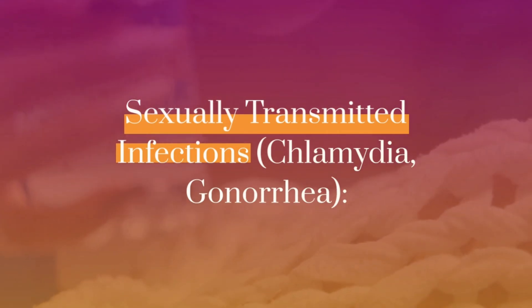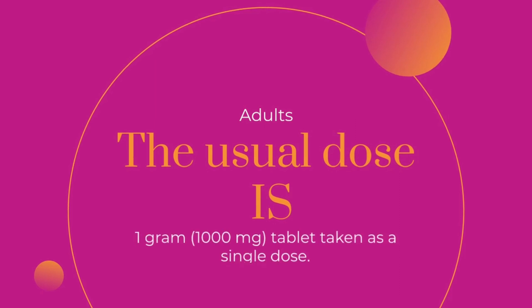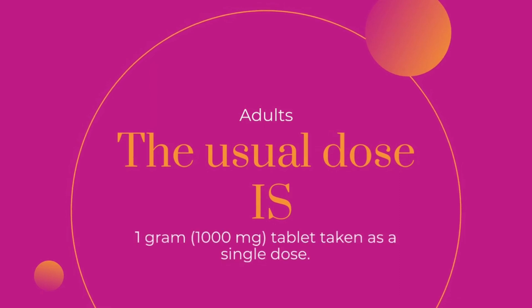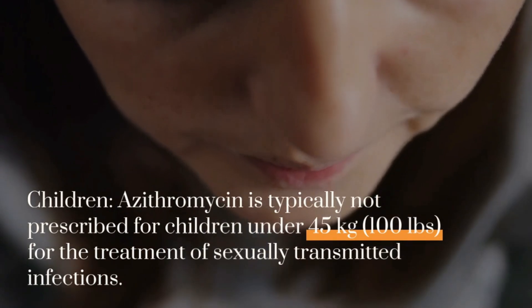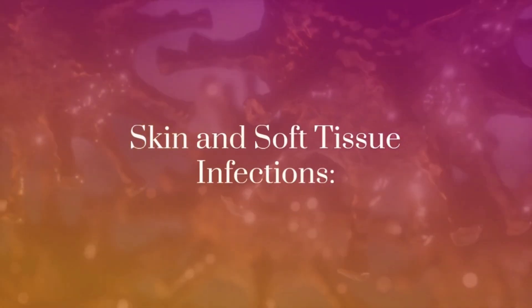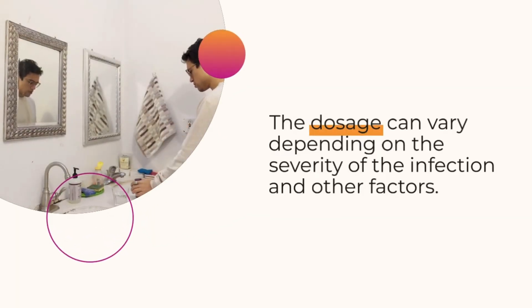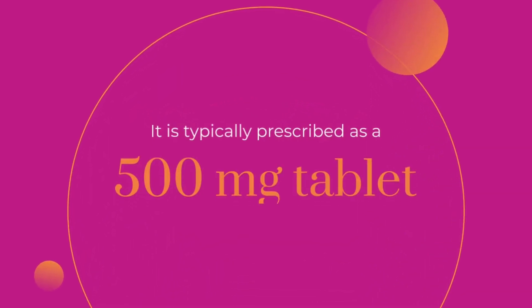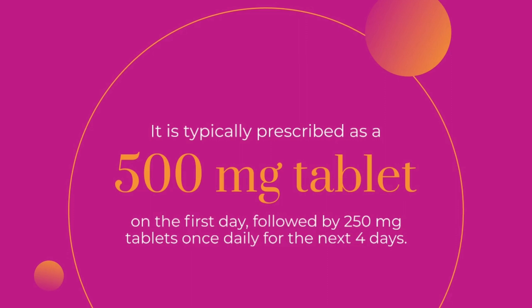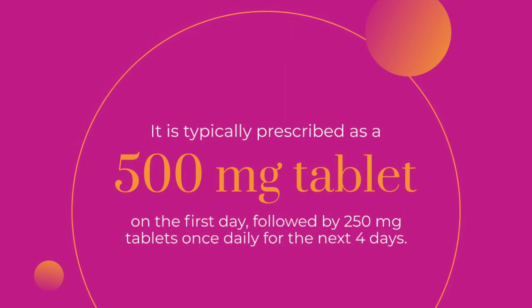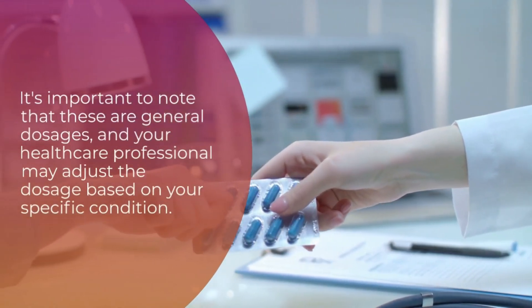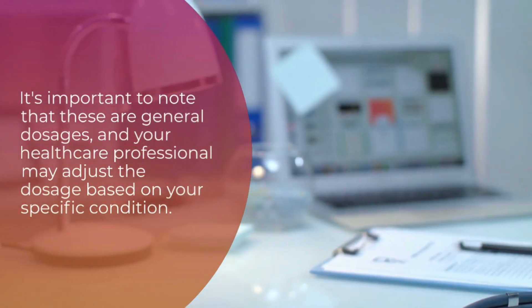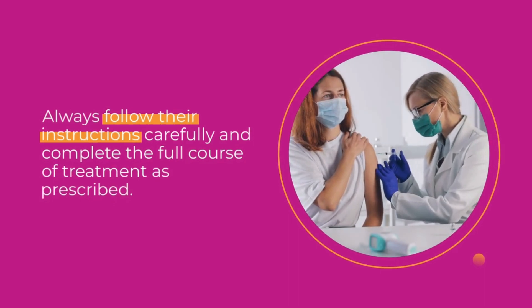For sexually transmitted infections, the usual adult dose is a single one gram tablet taken as a single dose. Azithromycin is typically not prescribed for children under 45 kg for the treatment of sexually transmitted infections. For skin and soft tissue infections, it is typically prescribed as a one-time 500 mg tablet on the first day, followed by 250 mg tablets once daily for the next four days. Always follow your healthcare professional's instructions and complete the full course of treatment.